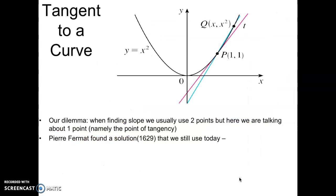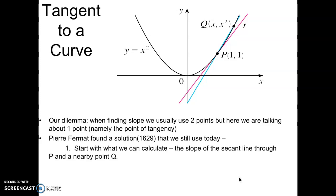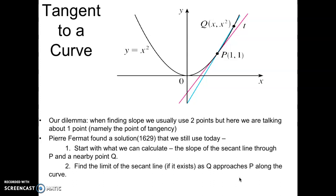The dilemma is that I can't calculate slope with only one point — I need two. A French mathematician, Pierre Fermat, found a solution back in 1629 that we still use today. He said: start with what we can calculate — the slope of the secant line through two points P and Q that are close to each other — and then find the limit of that secant line as Q approaches P along the curve. In other words, take the limit of the slope as the two points get closer and closer, so the denominator almost becomes zero but never reaches zero.